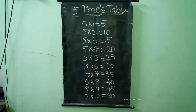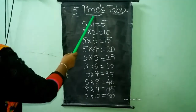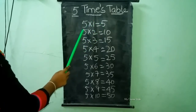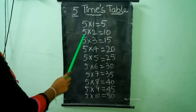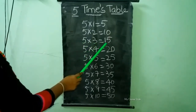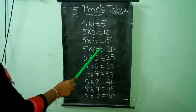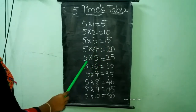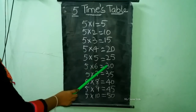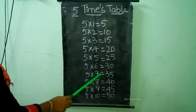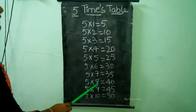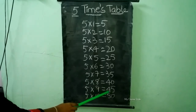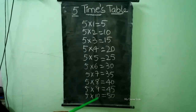5 times table. 5 times 1 is equal to 5. 5 times 2 is equal to 10. 5 times 3 is equal to 15. 5 times 4 is equal to 20. 5 times 5 is equal to 25. 5 times 6 is equal to 30. 5 times 7 is equal to 35. 5 times 8 is equal to 40. 5 times 9 is equal to 45. 5 times 10 is equal to 50.